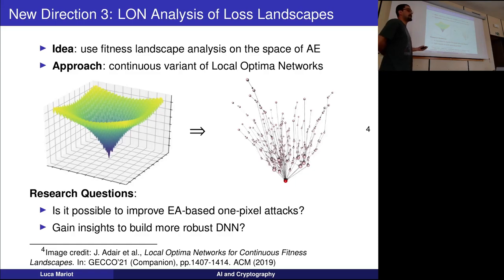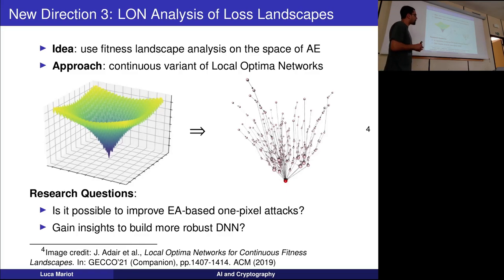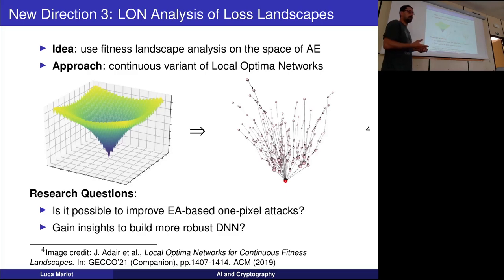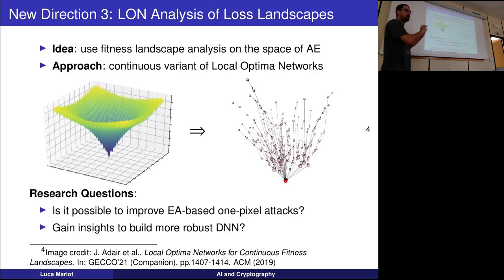By analyzing the fitness landscape of the one-pixel attack with differential evolution, we might gain insight into why it is so successful, and also find more robust deep neural networks without requiring the strong hypotheses of differential privacy — perhaps finding a hybrid situation with empirical robustness defenses that could be valuable.